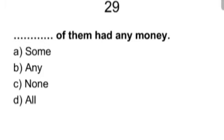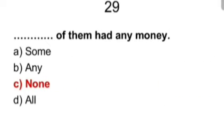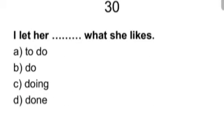Twenty nine. Blank of them had any money. Some, any, none, all. And answer is none of them. The last one for today's class, that is thirtieth. I later blank what she likes. To do, do, doing, done. And the answer is do. I later do what she likes. So in the next one, we'll have the remaining part. Thank you.